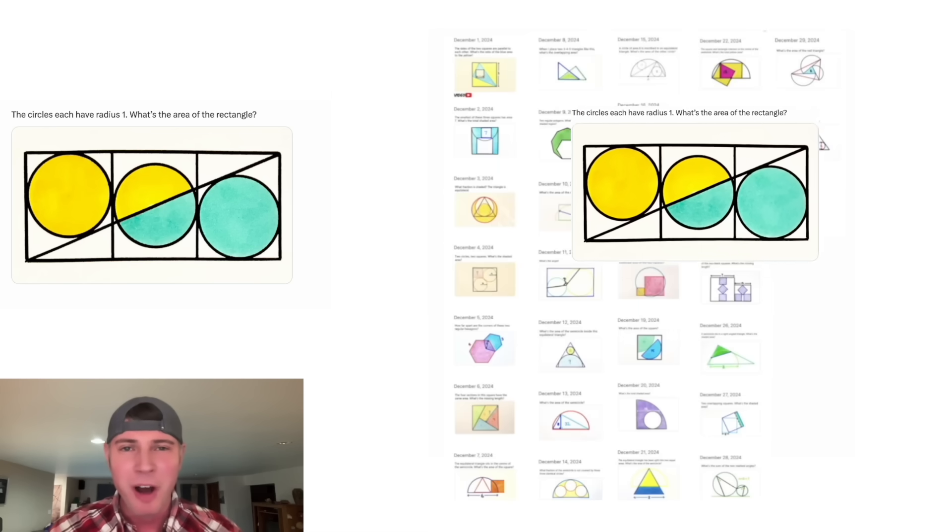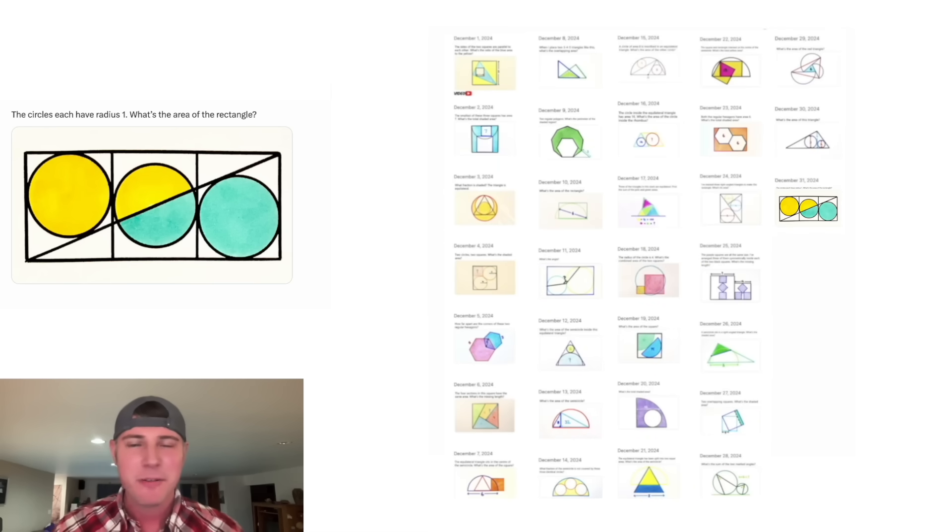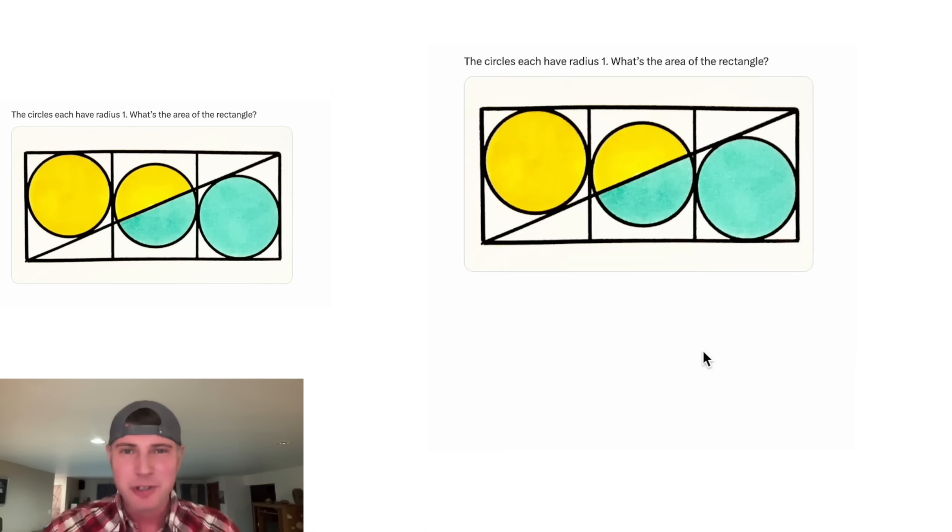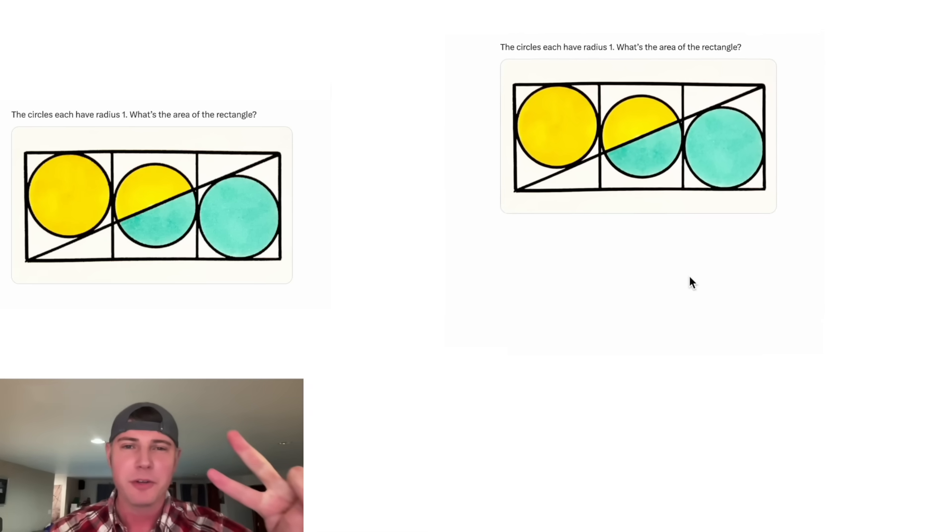This is day 31 of our Advent calendar. For the month of December, we're going to solve 31 Katrina Ag puzzles in 31 days. If you want to try this one, pause it right now, because I'm going to solve it in 3, 2, 1.